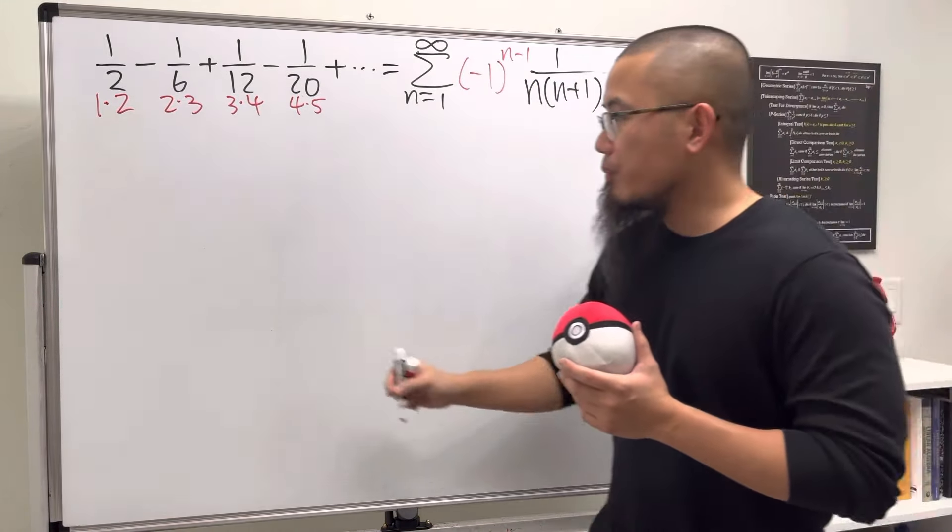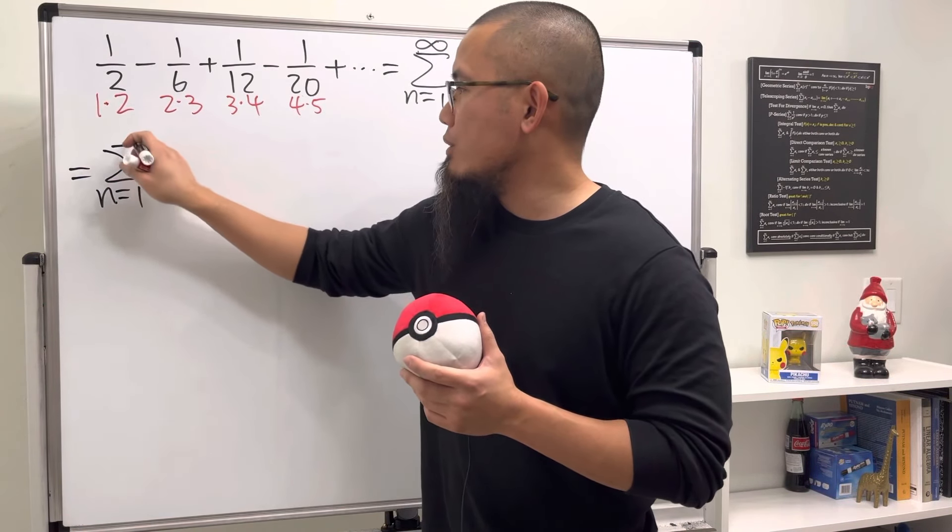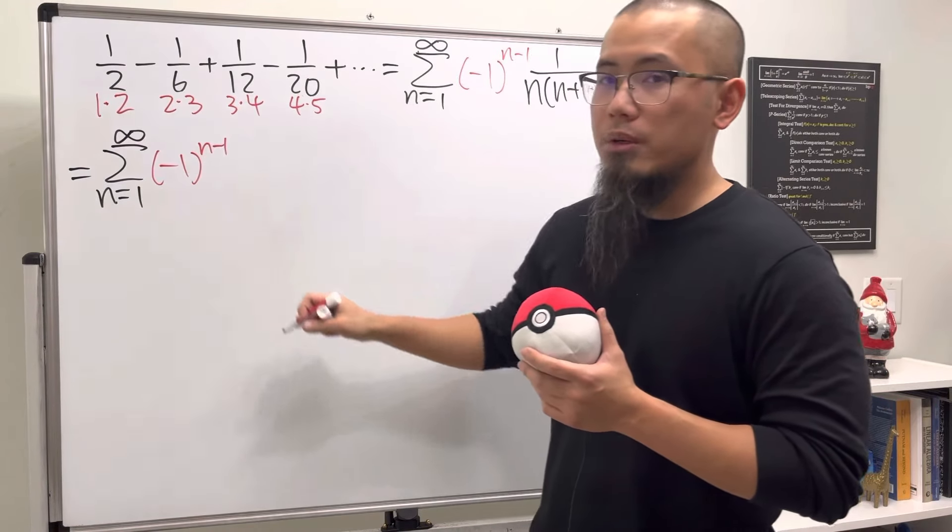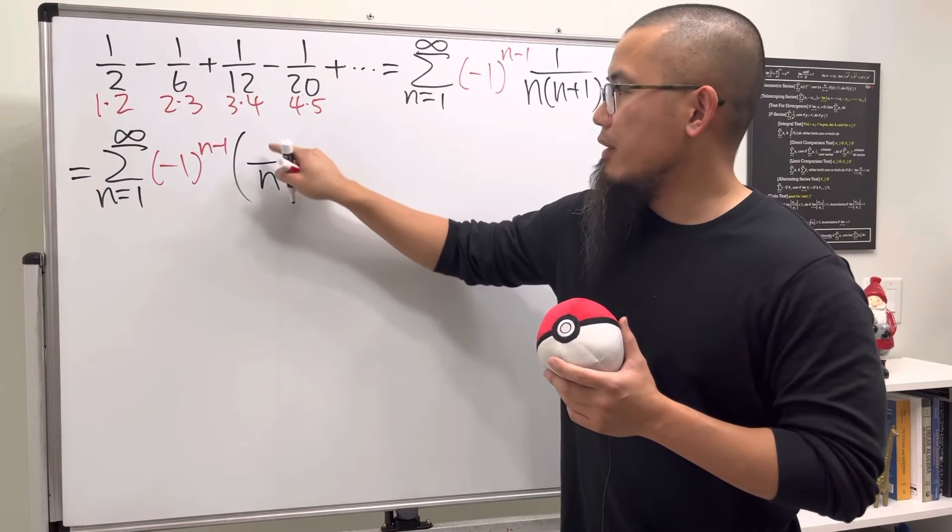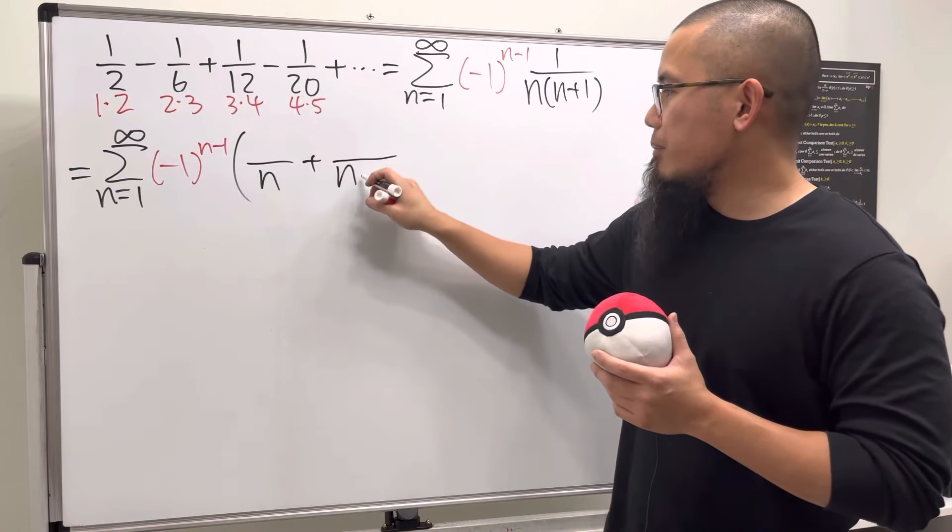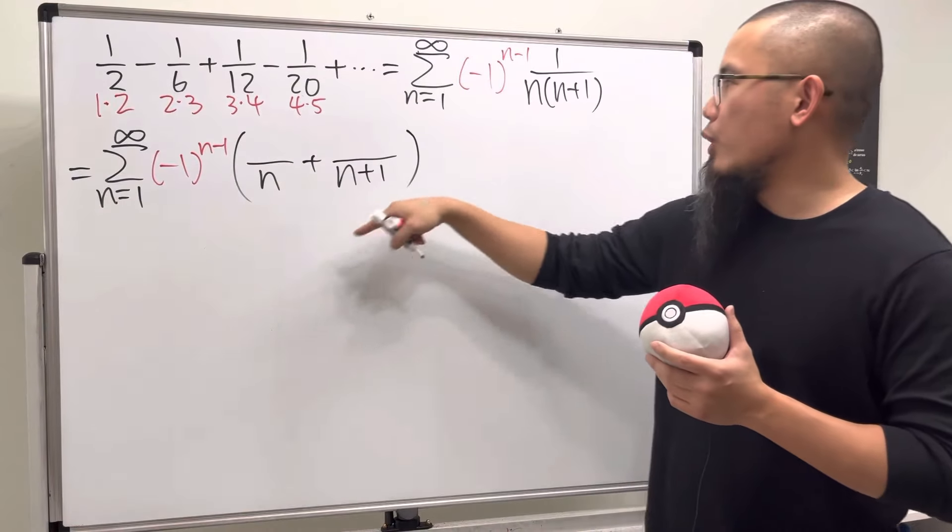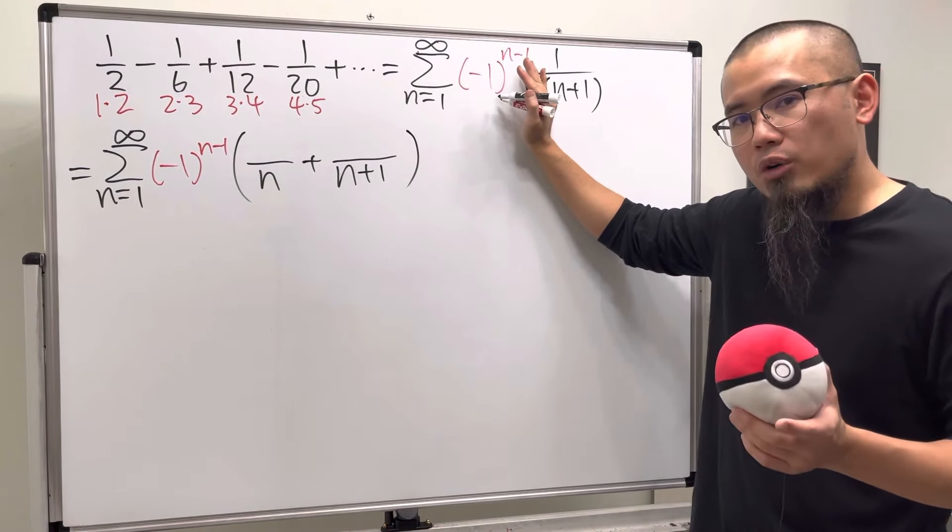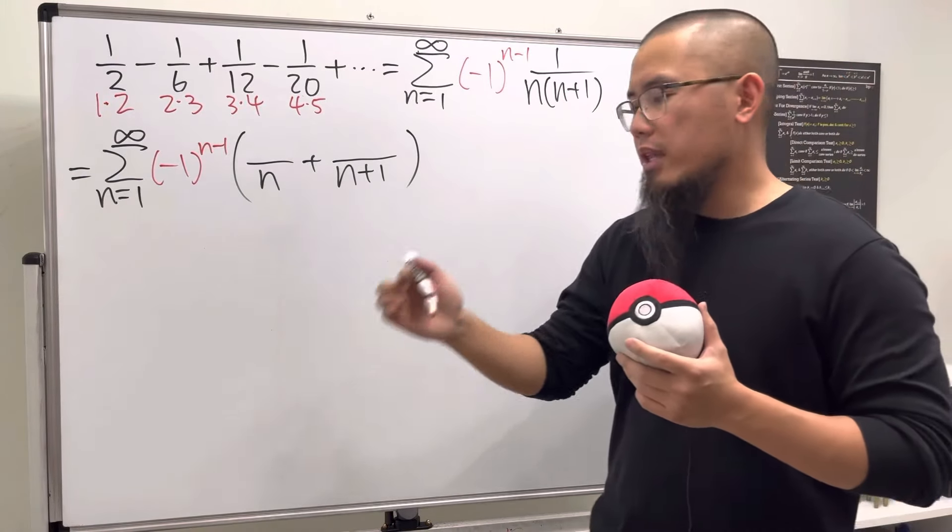We're just going to pretend that this alternating factor is not here and do the partial fraction for that. So we're going to get the series as n goes from 1 to infinity. We have (-1)^(n-1) - for this, of course, put on parentheses - and we're going to have the first fraction with some number over n and then the other one, some other number over n+1. To figure this out we go back to the original and cover the same denominator - n has to be zero, and you put zero in here: 1/(0+1) is just 1.